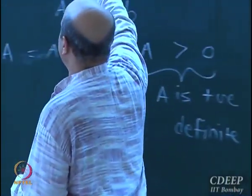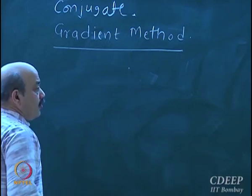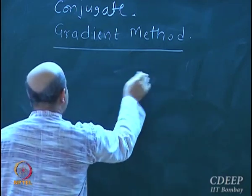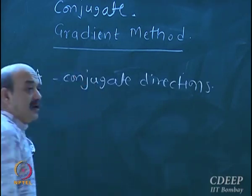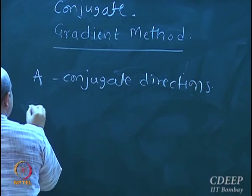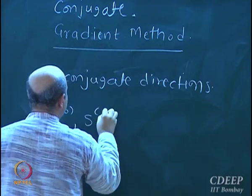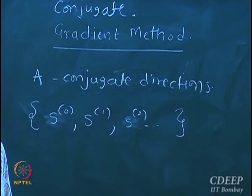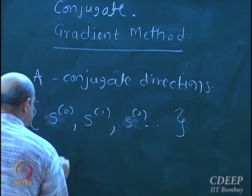There is a variant called the conjugate gradient method. Instead of moving along the gradient direction, we move along A-conjugate directions. Given a matrix A, a set of directions S_0, S_1, S_2, S_3 are called A-conjugate if for any two consecutive directions K and K minus 1, the inner product S_K transpose A S_{K-1} equals zero.